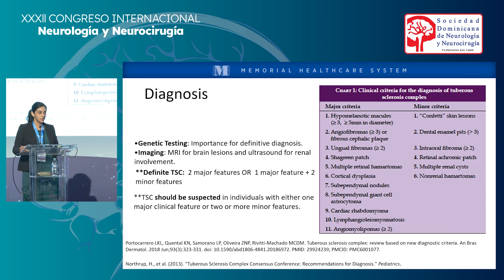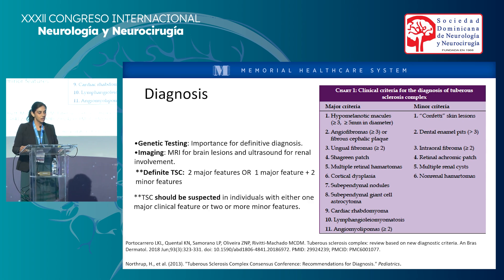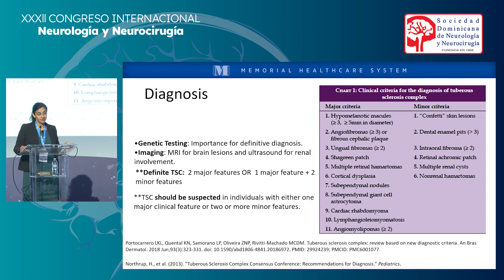For diagnosis, I've listed the clinical criteria for the diagnosis of tuberous sclerosis complex. Definite TSC requires two major features, or one major feature and two minor features. They did update the criteria — cortical dysplasias replaced the original term cortical tubers, and confetti skin lesions were modified for the more updated guidelines. Genetic testing is very important and provides a definite diagnosis, but you can have mosaicism.